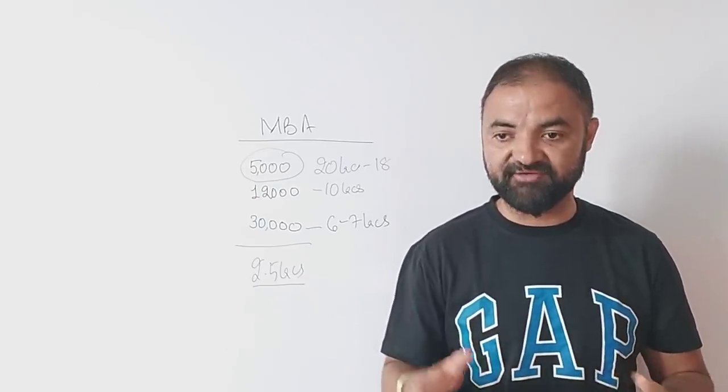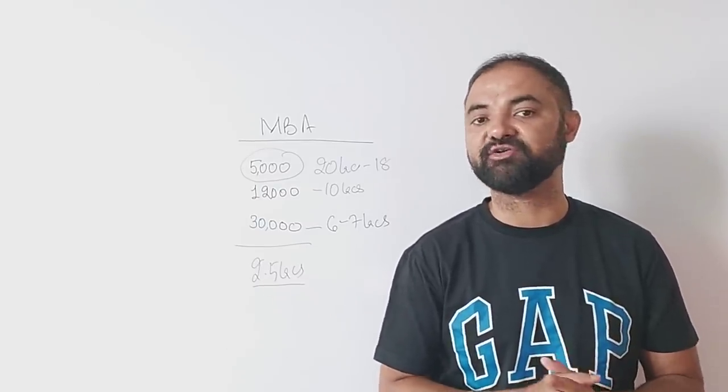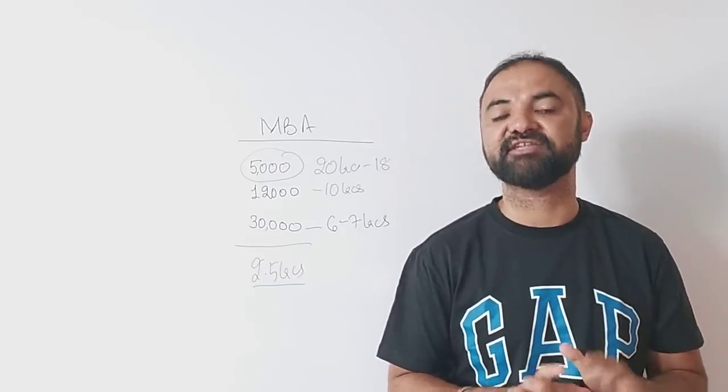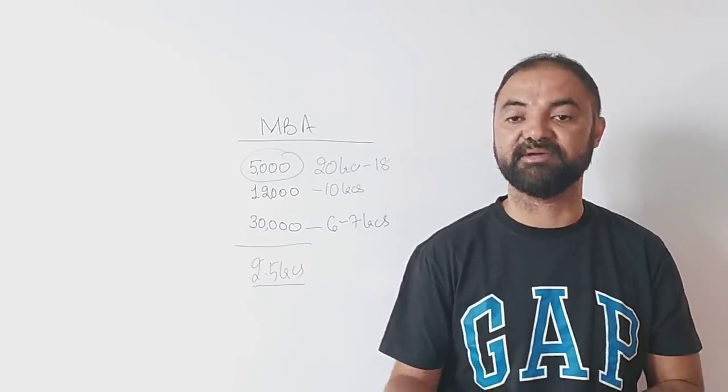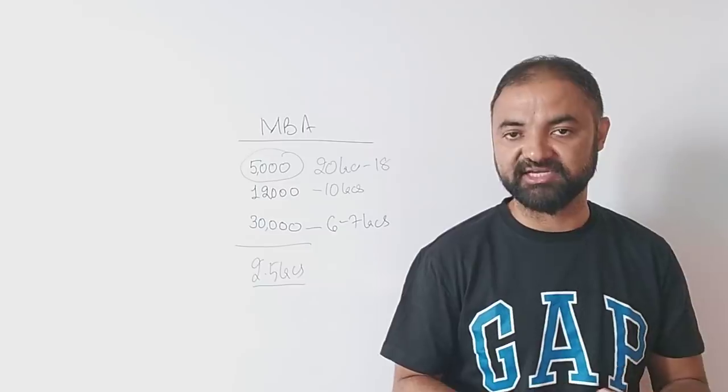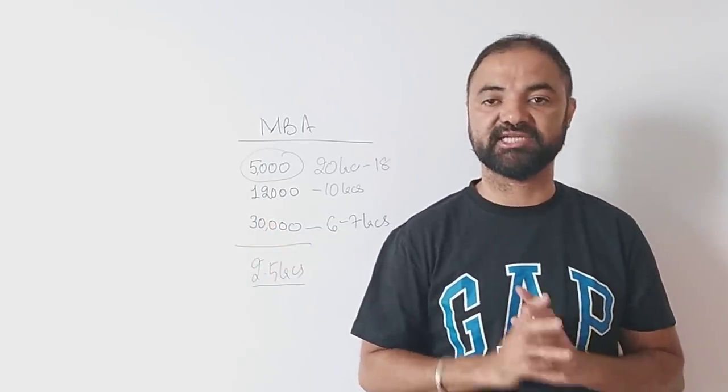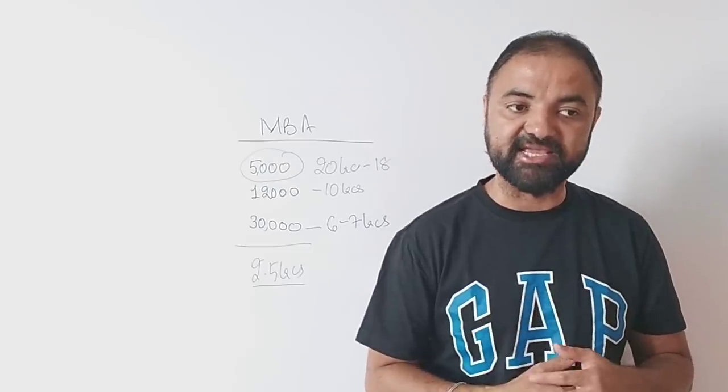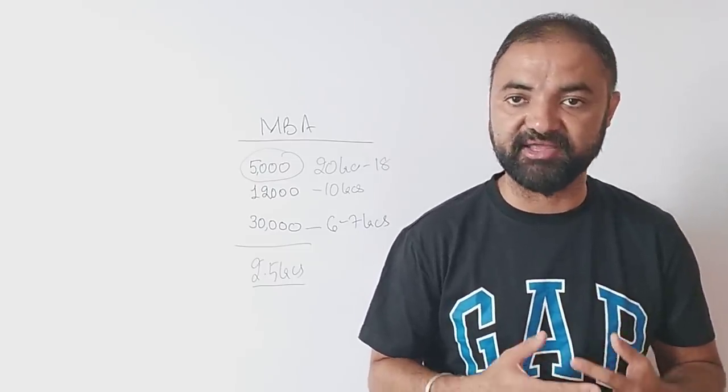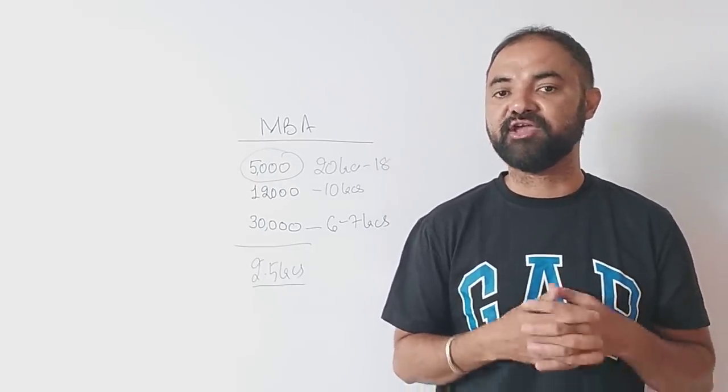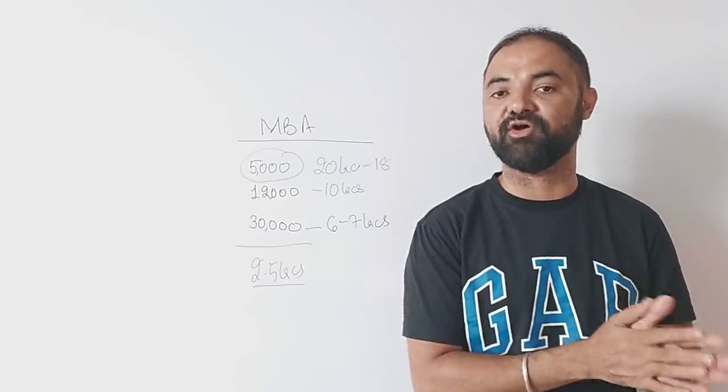Under that there are a lot of other b-schools as well which I don't recommend. Average number of students per b-school is around 300. So 300 into 100 equals 30,000 students. Top 100 b-schools is something which is valued. The rankings you can see anywhere on Google - there are a lot of rankings going on.